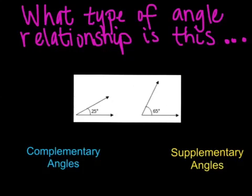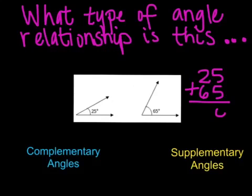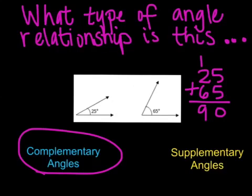A third example, these two are not touching. They're not together. I don't see a perfect straight line or I don't see a perfect corner. So to check this one, I'm going to do 25 plus 65. When you add these two together, you get 90 and the angle relationship that equals 90 is complementary.